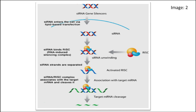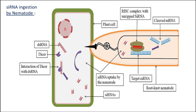This is the second picture of the RNAi mechanism — both diagrams illustrate the same process. Here we can see how siRNAs are ingested and processed inside the root-knot nematode, and how siRNA targets the nematode's mRNA.